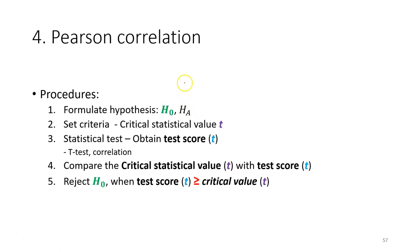For the procedure, it's the same as the t-test. First, formulate the hypothesis. Second, set the criteria — find the critical statistic value for t from the t-table. Third, obtain the test score by calculating the correlation coefficient and then performing the t-test on it. Then compare the critical statistical value from the table with the calculated t-test score. Finally, make a decision whether to reject or not reject the null hypothesis.